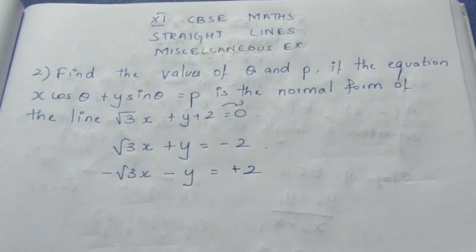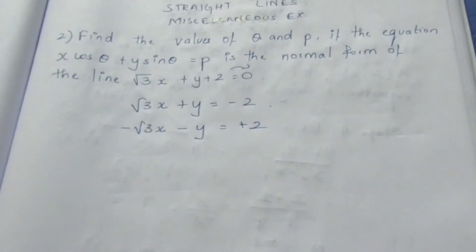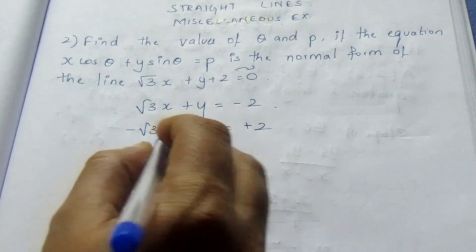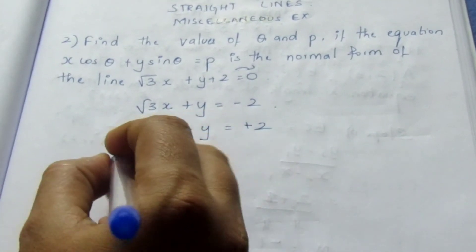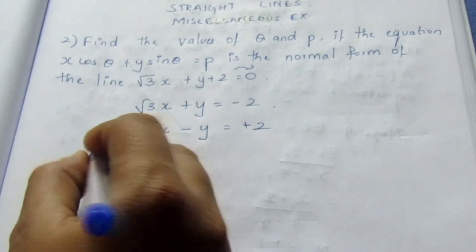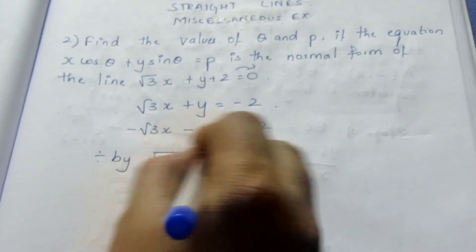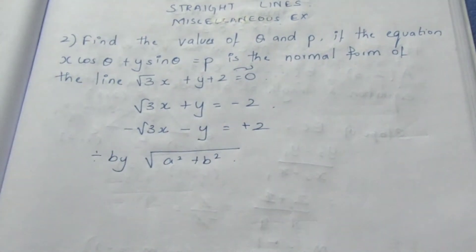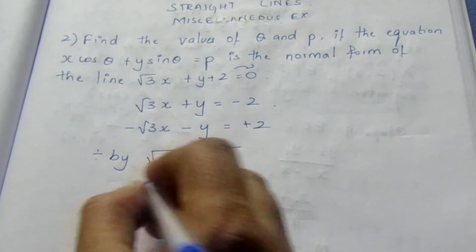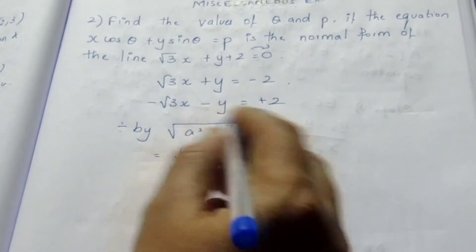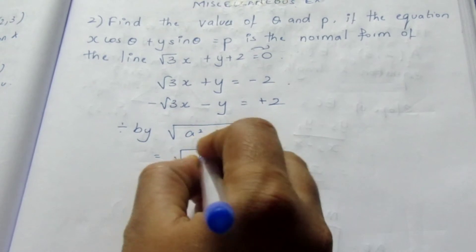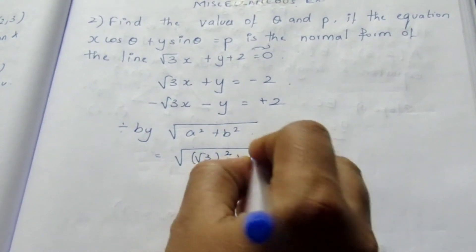We have changed the sign. We need to divide it by the coefficient of x square plus y square. Find the coefficient dividing by root of a square plus b square. This becomes root 3 square plus 1 square.